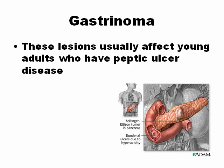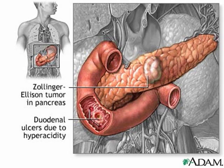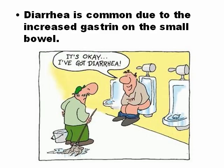Gastrinoma generally affects young adults who have peptic ulcer disease. When a person has peptic ulcer disease that is not easy to heal, you can suppose the person has a gastrinoma. This disease is also called Zollinger-Ellison syndrome — the person suffers peptic ulcer because of too much acid in the stomach. Diarrhea is very common in gastrinoma. Remember, gastrinoma is also called Zollinger-Ellison.